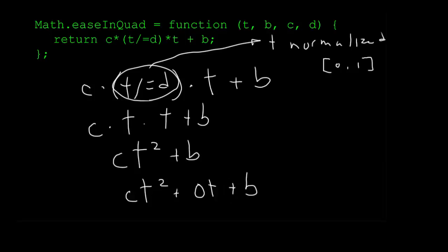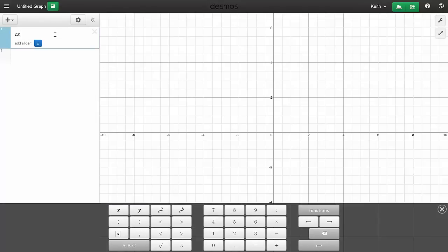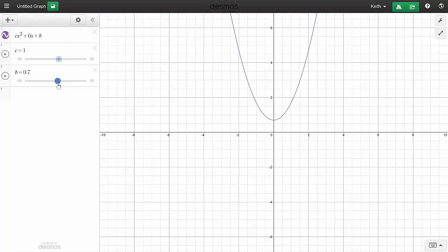Remember that c is the change that will take place in the value over the course of the tween, and b is the beginning value. So let's put that on our graph. We'll have to change t to x, but otherwise it's the same. We'll say yes to a slider for c and b, and we'll change b to be 0.